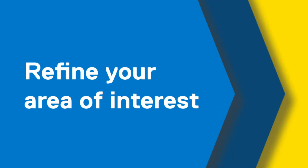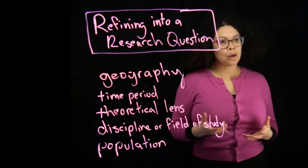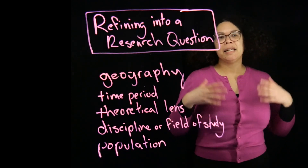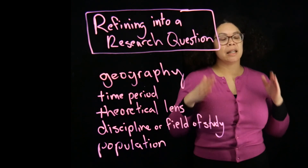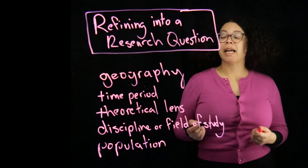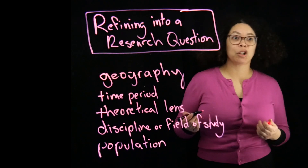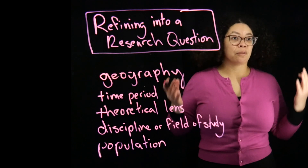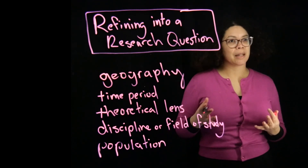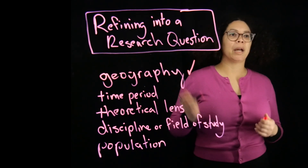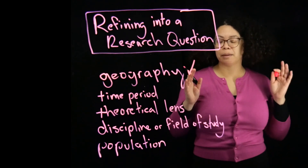Now we're going to talk about how to refine your area of interest into a more specific research question. We know that we want to look at climate change and its impact on the loss of biodiversity. One way we can narrow that focus is to consider a specific geography — for example, do I want to look at its impact on biodiversity globally, or do I want to look just at the Canadian or North American context?